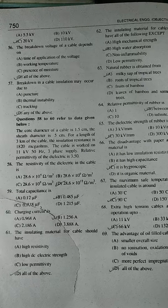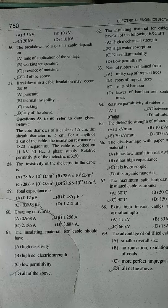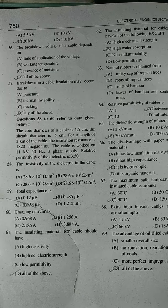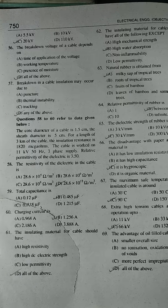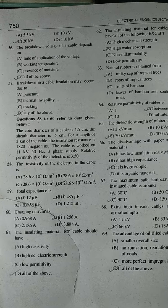58. Given cable data: resistivity is 28.6 × 10^12 ohm·meter squared. Core diameter is 1.5 cm, overall diameter is 5 cm, length is 3 km. Insulation resistance is 1820 mega-ohms. The cable is operated on 11 kV, 50 Hz three-phase supply. Relative permittivity of the dielectric is 3.50. The resistivity of the dielectric in the cable is 28.6 × 10^12 ohm per meter cube.